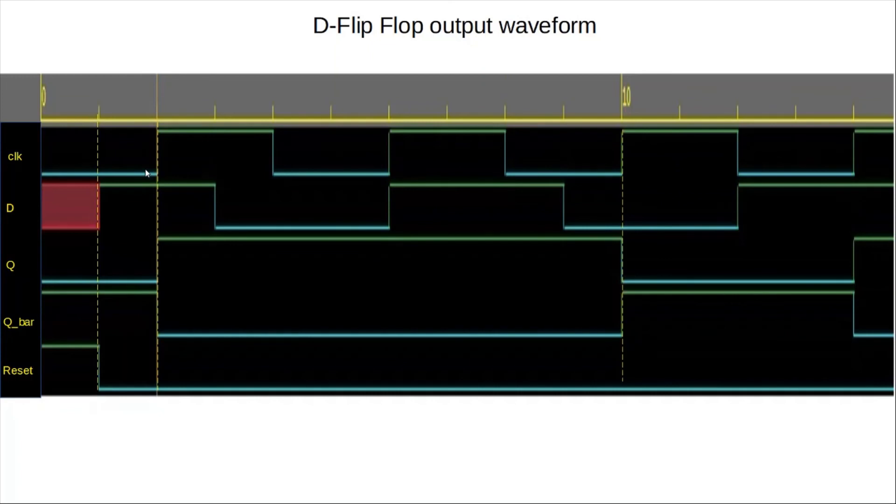The next marker basically shows the positive edge of the clock. At this point, prior to this clock edge, D is one, so we see that being transferred onto the output here. And the third marker is essentially showing D has gone to zero, gets registered here, or gets detected at this edge, and then basically Q goes low, and Q_bar at all times is the inverse, pretty much.